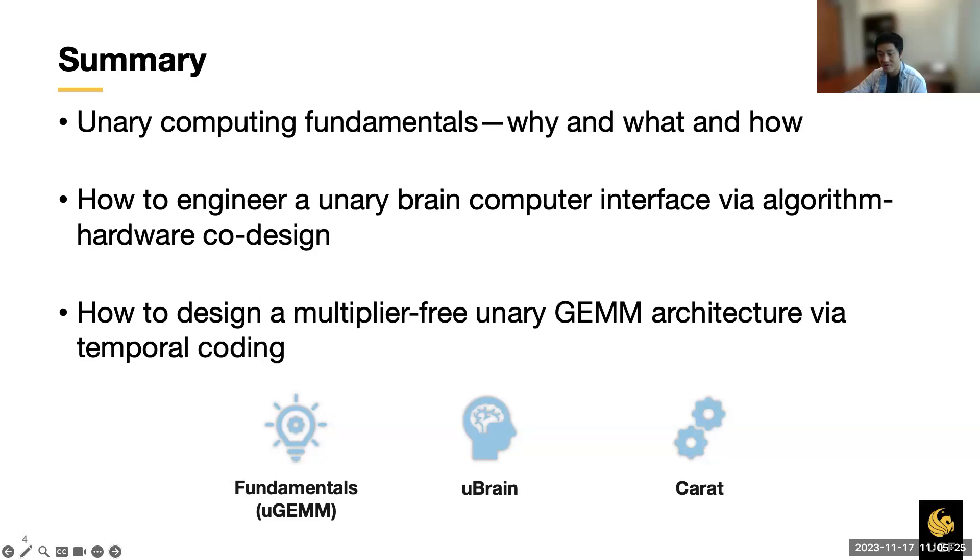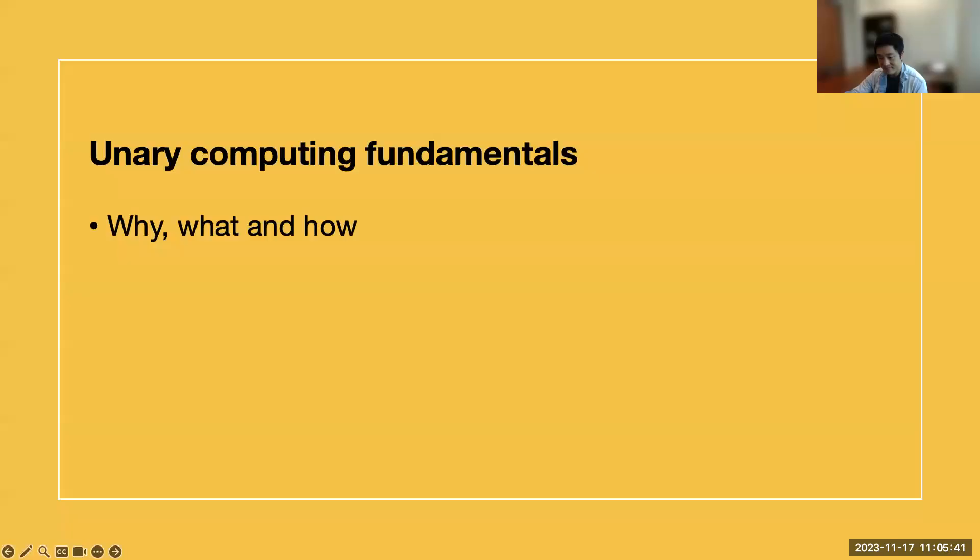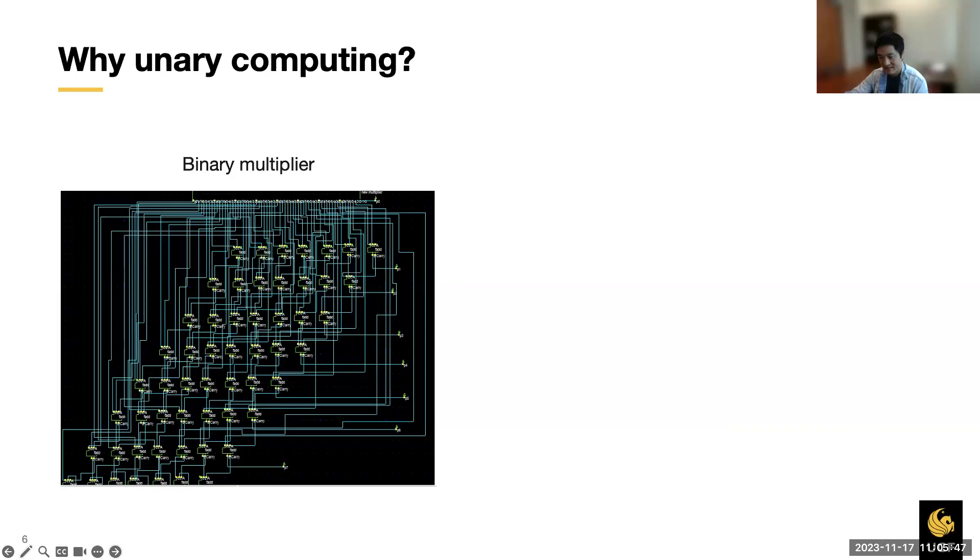Specifically, I will describe why unary computing has the potential to serve as a first-class citizen in power-efficient computer architecture, what unary computing exactly is, and how to do unary computing practically. Then I will introduce how to leverage unary computing to engineer a brain-computer interface via algorithm hardware co-design. At last, I will showcase how to design a unary GEMM architecture via temporal coding, which is able to perform GEMM without multipliers.